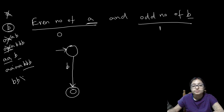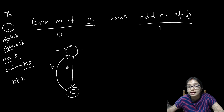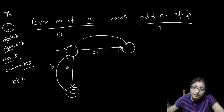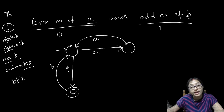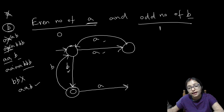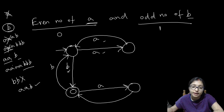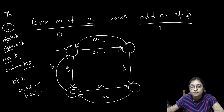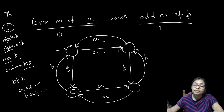Whenever 2B comes, is it accepted? No. So from the final state, when 2B comes that is not accepted. When only 1A comes — is it accepted? No, that is not accepted. Whenever 2A comes it is also not accepted. But with 2A, if another B comes — meaning AAB — then only it is accepted. Now from the state with 1B, another A can come which is rejected, but if another A again comes — meaning BAA — that is accepted.